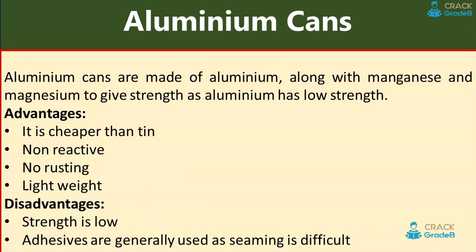Aluminium cans are made of aluminium along with manganese and magnesium, which gives additional strength since aluminium has low strength. Advantages: cheaper than tin, non-reactive in nature, no rusting, and light in weight. Disadvantages: lower strength, and adhesives are generally used as seaming is difficult with this type of can.